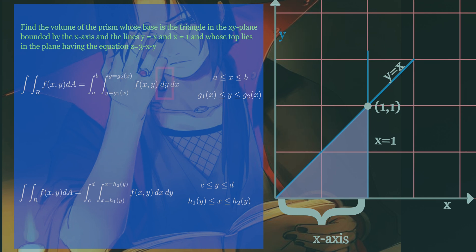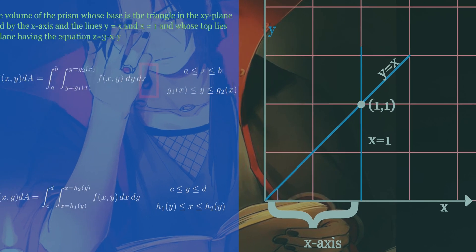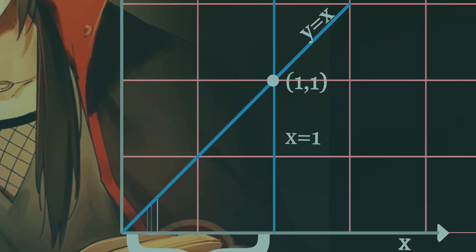If we integrate first with respect to y, we are integrating along the vertical line on this triangle. Here we integrate from left to right to include all these vertical lines.